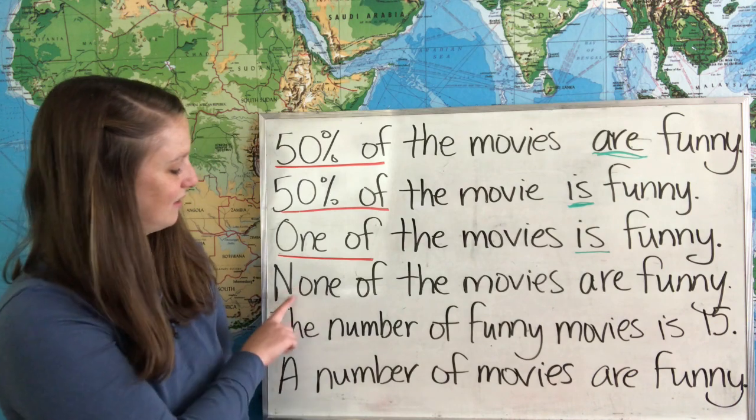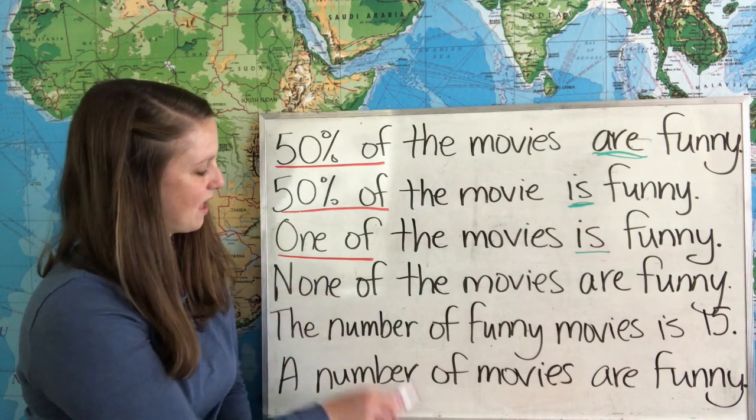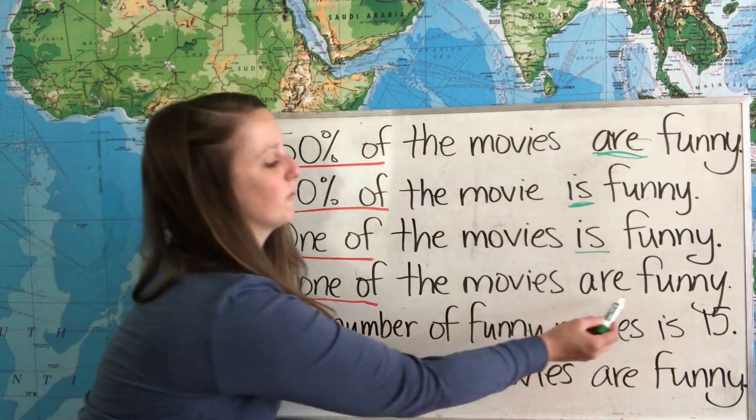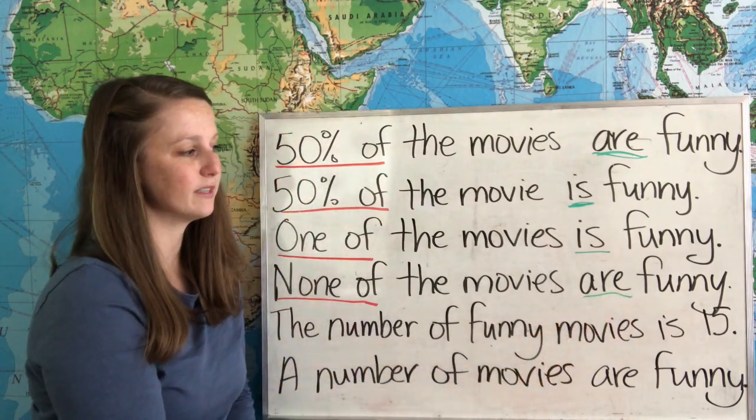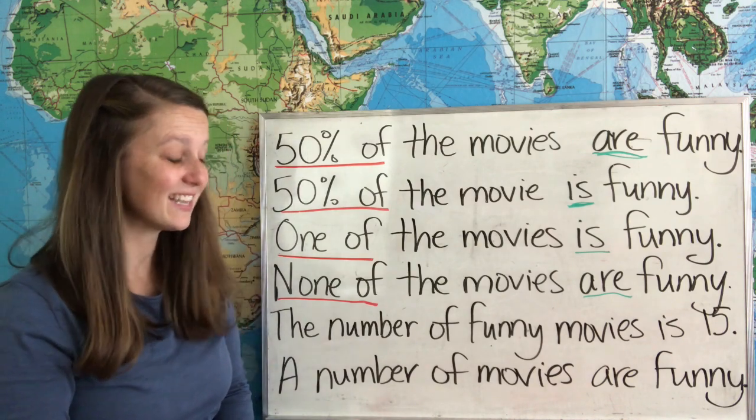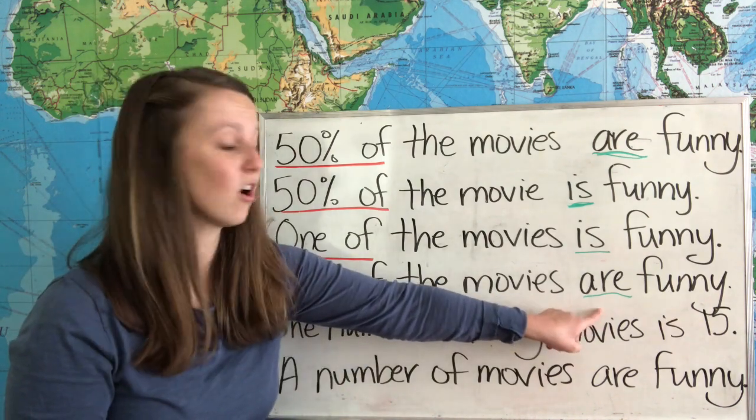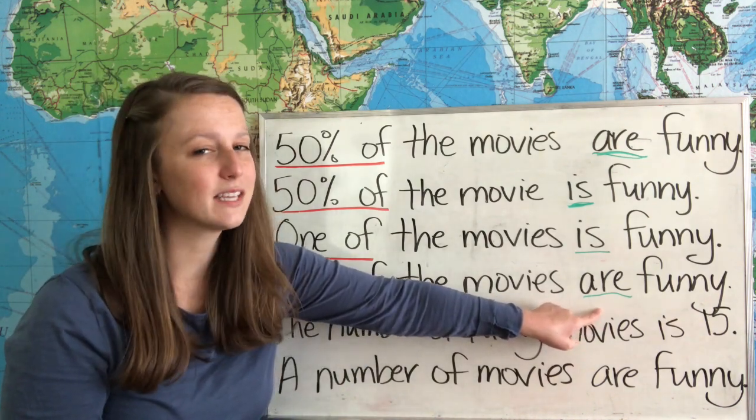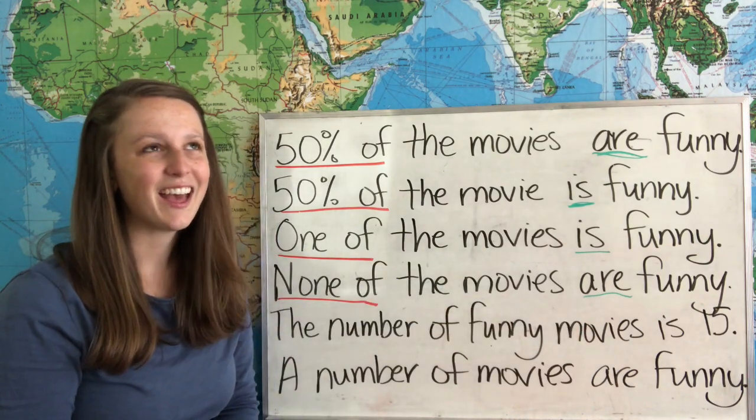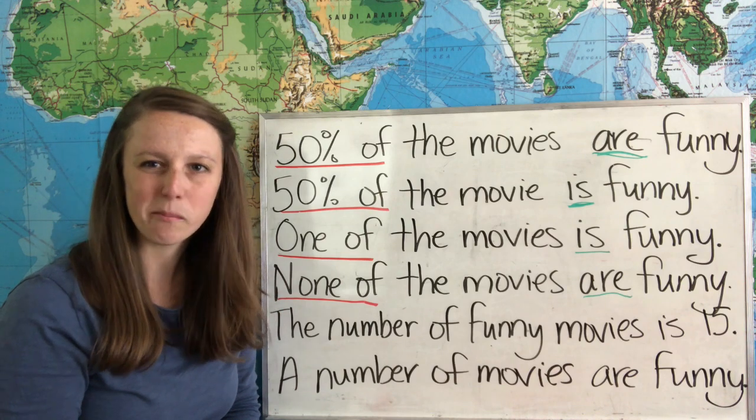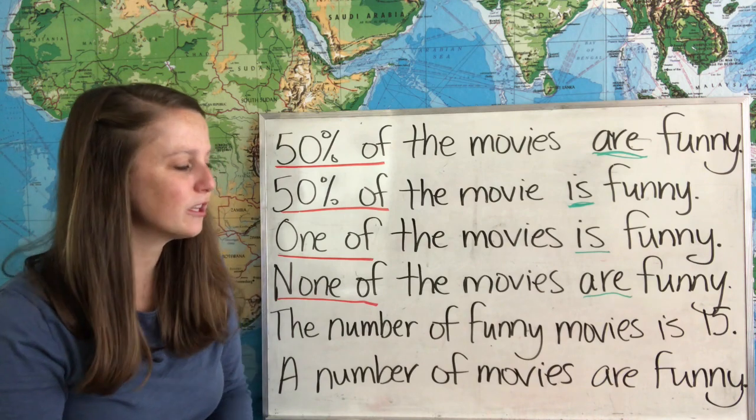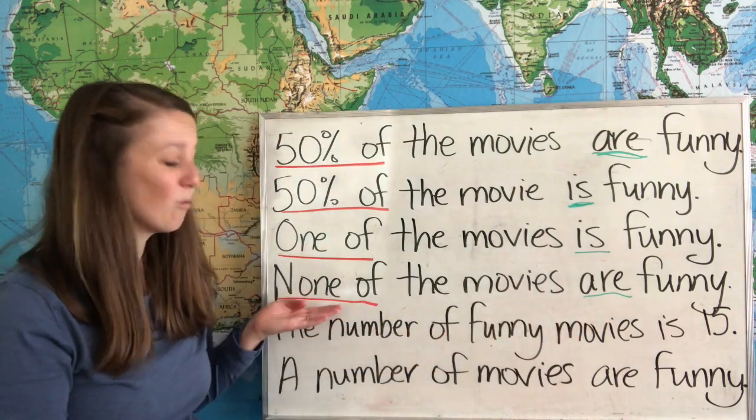Now our next example has none, none of. And we use the plural form are. None of the movies are funny. That means zero of the movies are funny. Now in this case it's actually okay to use are or is. You can use the singular or plural, but the plural form is much more common. And if you use the singular form it sounds very formal or stiff. We will sometimes use it in writing, but we usually use the plural form with none of.